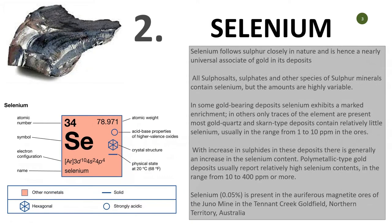Number two is selenium. Selenium, with an atomic number of 34, is very critical. It is closely associated with sulfur when it comes to gold exploration. All sulfur salts, sulfates, and other species of sulfur minerals contain selenium, but amounts are highly variable depending on the kind of deposit. With increasing sulfide content in some deposits, there is a general increase in selenium content, especially in polymetallic types of gold deposits.